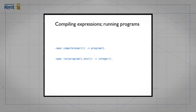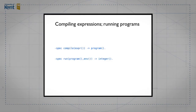We have two major functions to implement. The first is to compile an expression into a program — it takes a single expression and returns a list of instructions. The second is to run a program, which takes a program and an environment for variable lookup and returns the result as an integer.